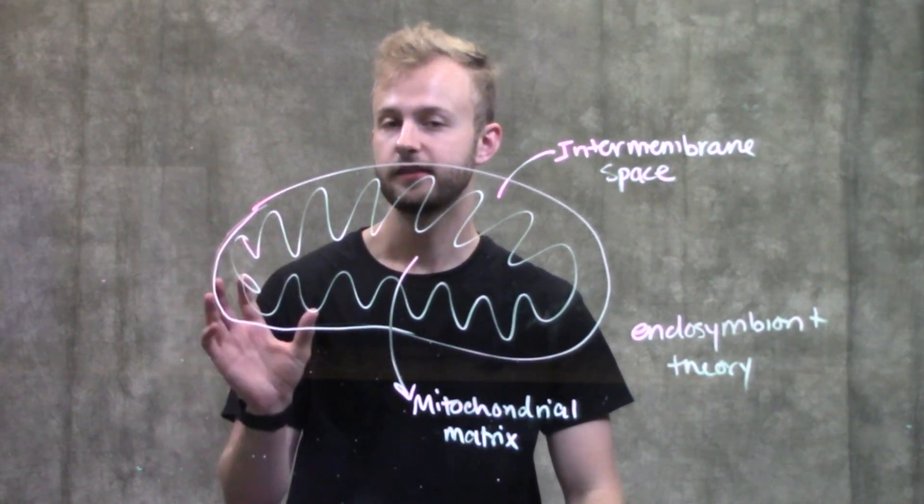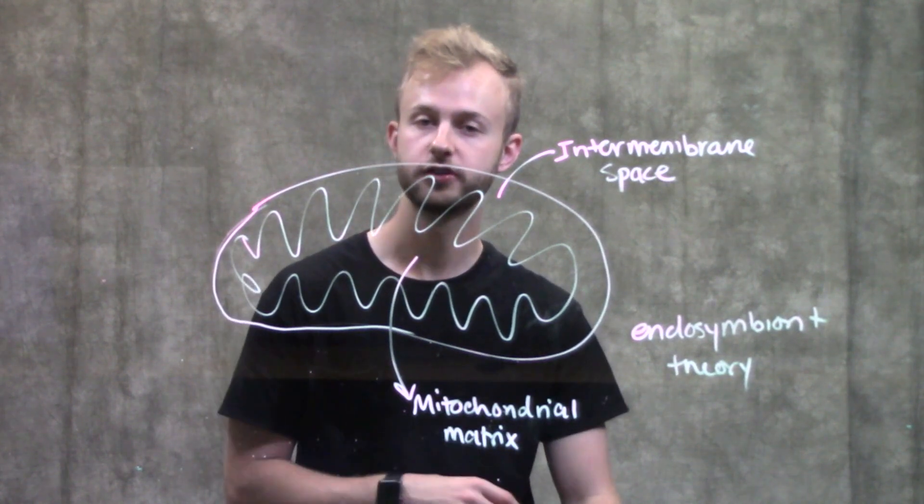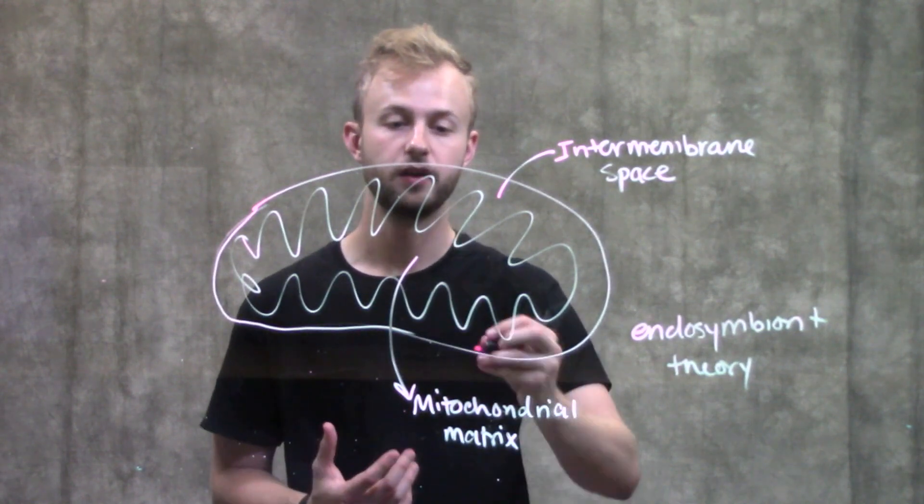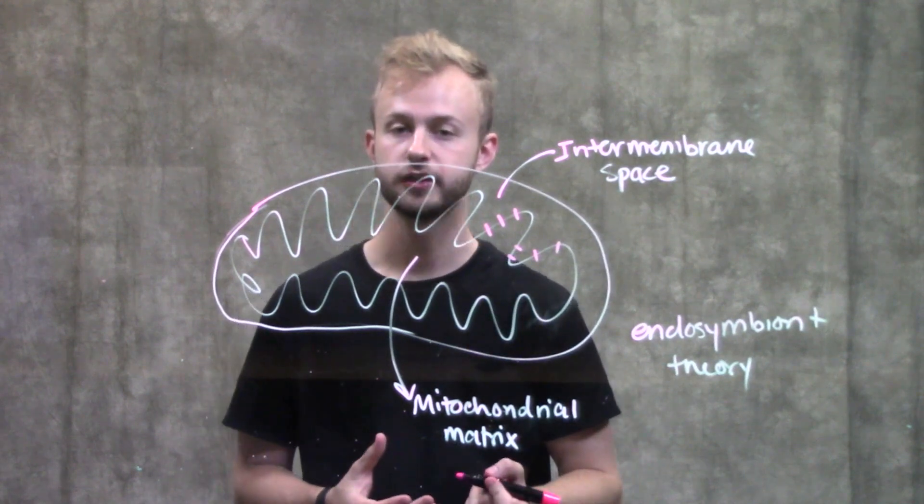Like I said, the mitochondria is really important in cellular respiration. A lot of those enzymes that are needed for cellular respiration are found within this mitochondrial matrix, as well as within this inner membrane of the mitochondria.